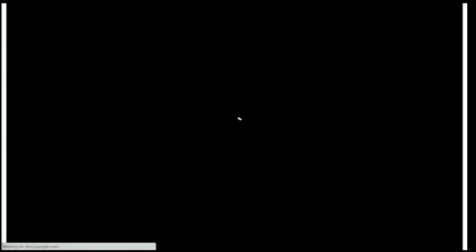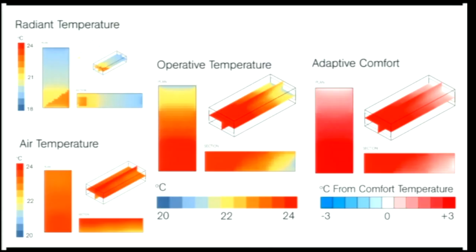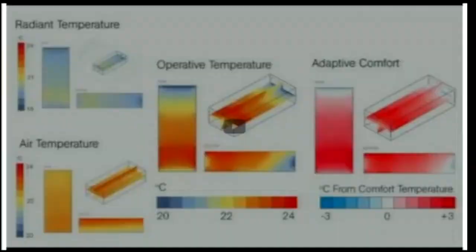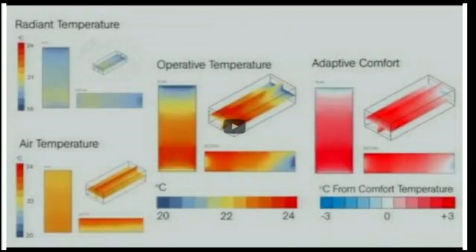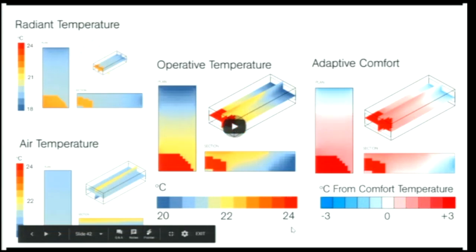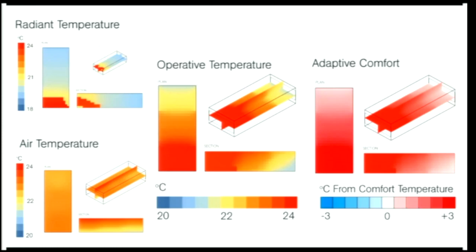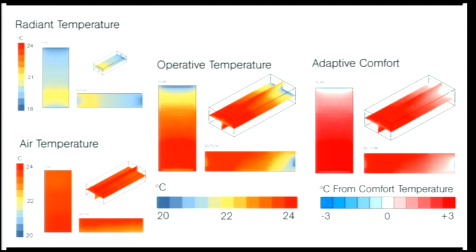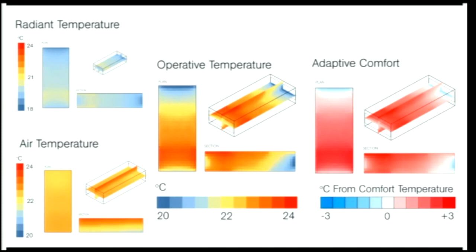My thesis was about taking these four things derived from interoperability and merging them into one microclimate map showing the spatial variation of temperature across a space — and ultimately showing that in relation to a comfort model, adaptive thermal comfort of warm versus cool temperatures across the space. This type of visualization had not existed before because no one had really built all this interoperability before. Key to it, in relation to point-in-time CFD studies, is that it is temporal — an hour-by-hour view of temperature over the space — and you can simulate an entire year this way fairly quickly.